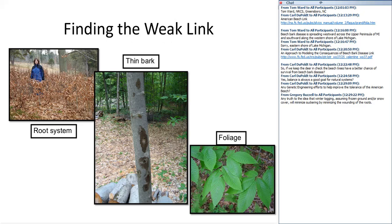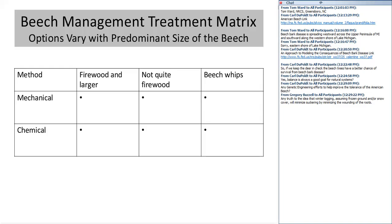Beech has three weak links: the root system, the thinness of the bark, and the foliage. We'll look at each of these when we think about the different treatment strategies. We're going to break out those treatment strategies based upon the predominant size of the beech — three categories: trees that are firewood size and larger, trees that are sapling size, and seedlings or beech whips.